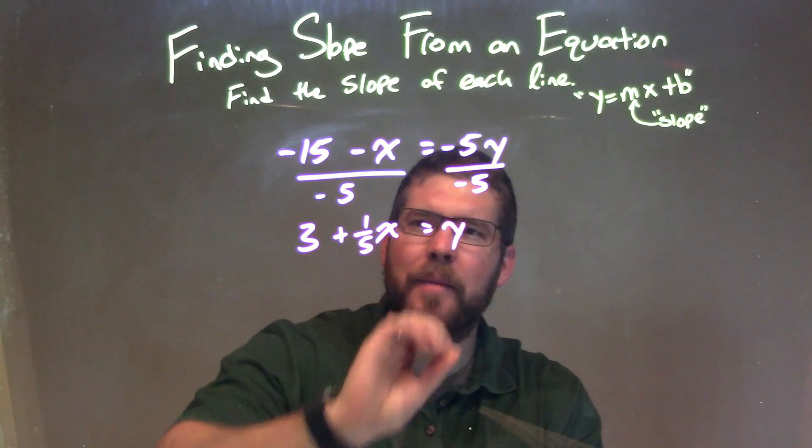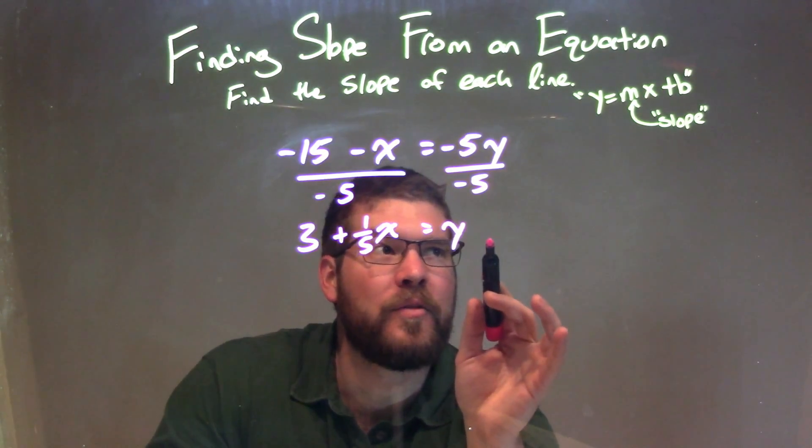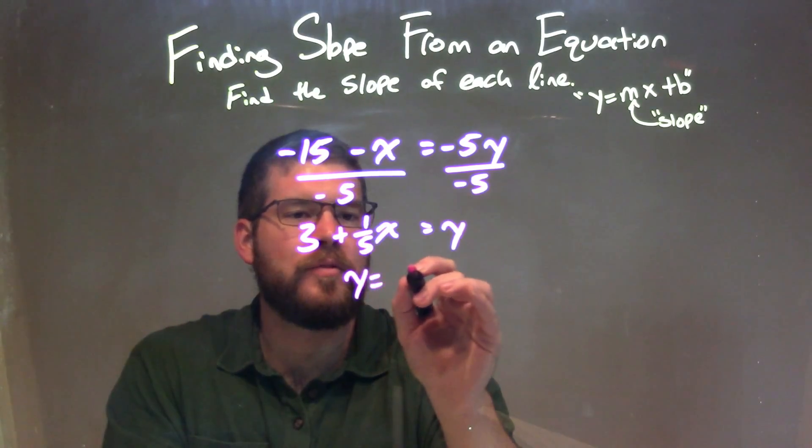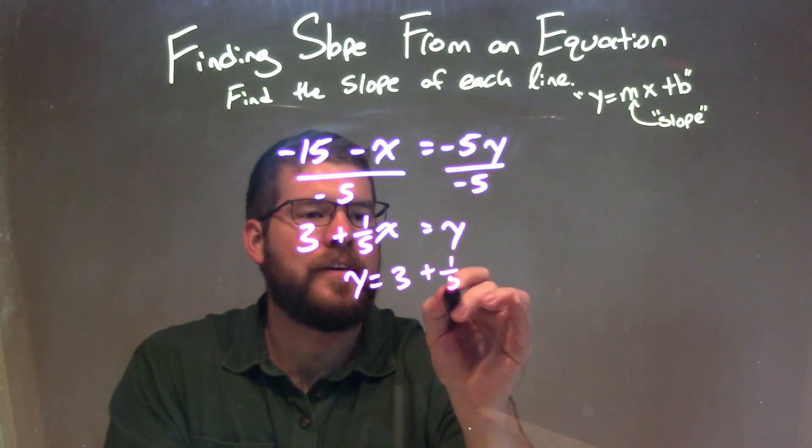So now we have 3 plus one-fifth x equals y. It might be a little hard to see in slope-intercept form, so I'm going to rearrange it. Have y come first: y equals 3 plus one-fifth x.